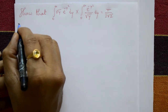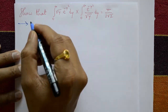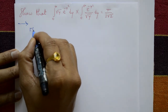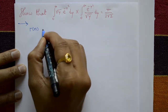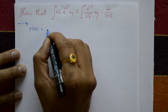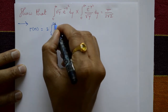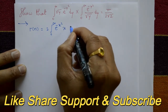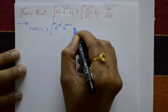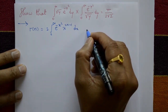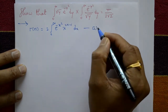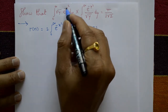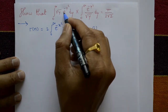The standard definition of gamma(n) is equal to 2 times the integration of 0 to infinity of e to the power minus x squared times x raised to 2n minus 1, with respect to x. Call this equation number 1.